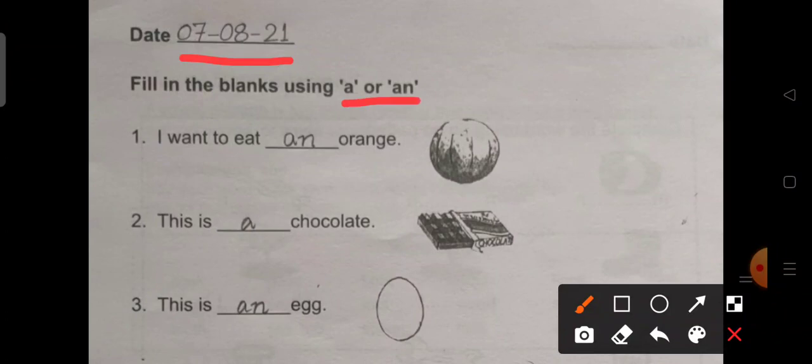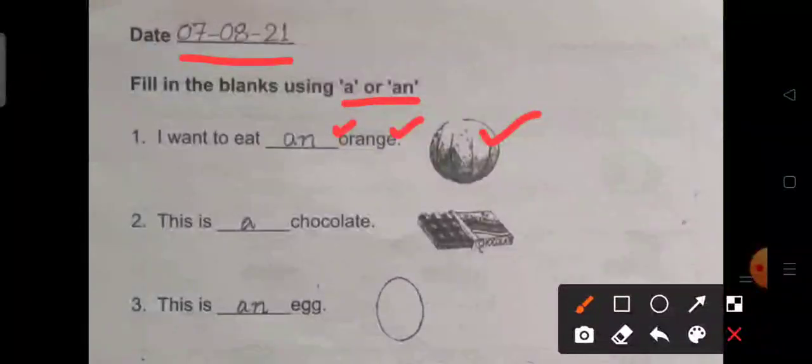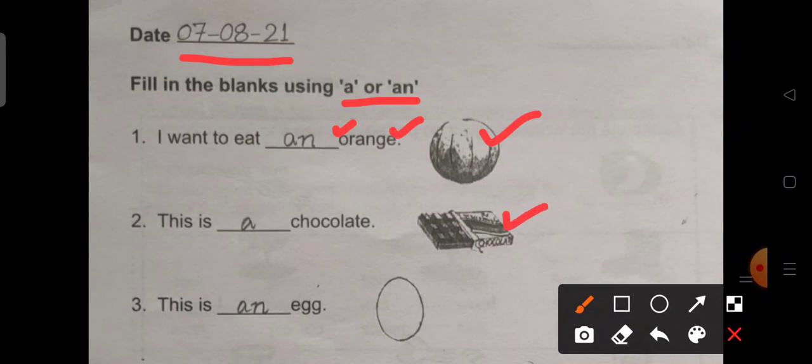Number 1. I want to eat dash orange. I want to eat an orange. Number 2. This is dash chocolate. This is a chocolate. We have written a before chocolate because it begins with a consonant sound.